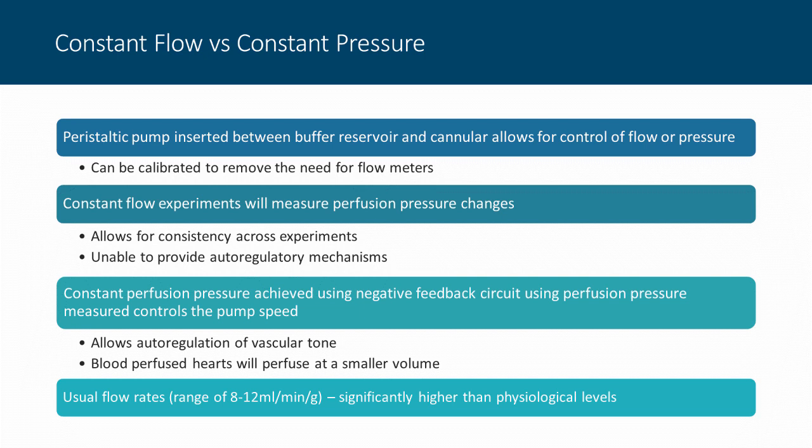Alternatively, constant hydrostatic pressure can be achieved by placing a perfusate reservoir or bubble trap at a predetermined height to maintain preload and afterload pressure. Work by SHADOC developed an electrical feedback system allowing for more precise perfusion pressure recorded at the junction block adjacent to the heart, controlled by the peristaltic pump, also allowing a switch between constant flow and constant pressure. This allows us to visualize how perturbations in either parameter influence the other.